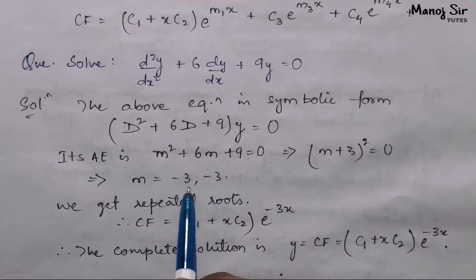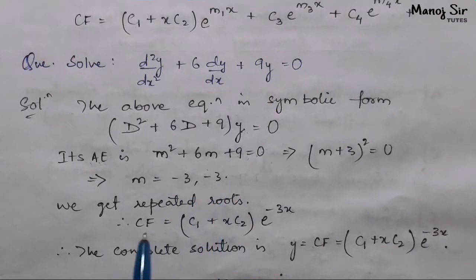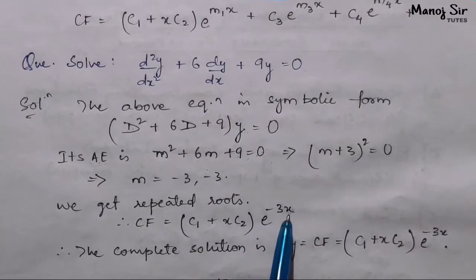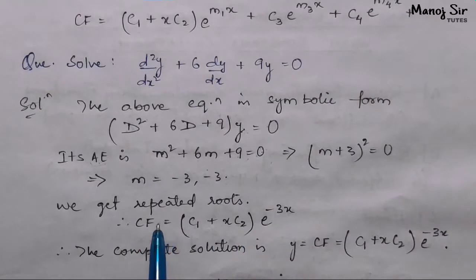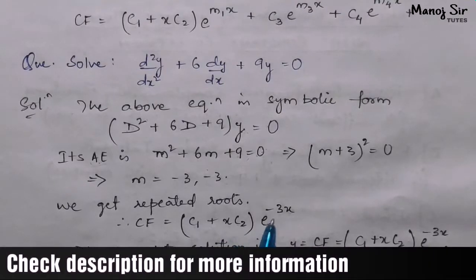Here we have achieved repeated roots, that is -3 and -3. Since we have achieved repeated roots, therefore CF = (c₁ + xc₂)e^(-3x).